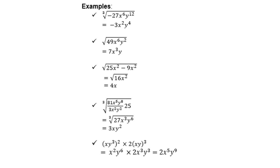Then x to the power 6 will be x squared, because remember your exponential law tells you if you multiply you add the exponents. So x squared times x squared times x squared is x to the power of 6. Or you can just divide the 6 by 3.